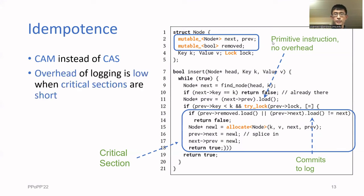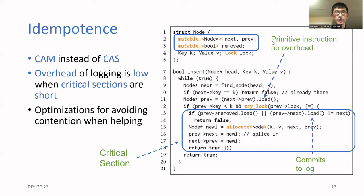In our experiments, we see that the overhead of committing to the log is usually not bad. This is because the logs are short, and most of the writes to it are cache hits. Helping can add contention to the log, which degrades the cache performance, so we had to come up with some optimizations for avoiding this. And this is basically how our idempotent technique works.